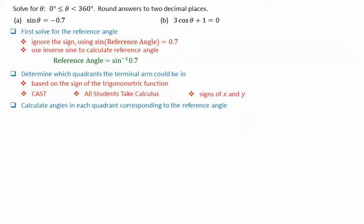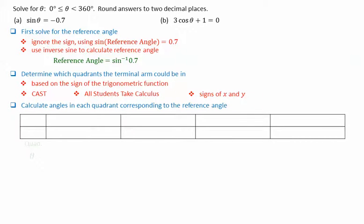We then calculate the angles in each quadrant corresponding to the reference angle. Recall that for quadrant 1, the angle corresponds simply to the reference angle. In quadrant 2, the angle theta equals 180 degrees minus the reference angle. In quadrant 3, 180 degrees plus the reference angle.